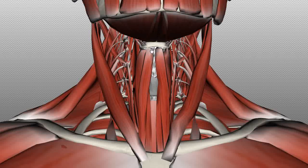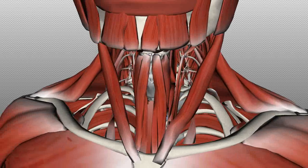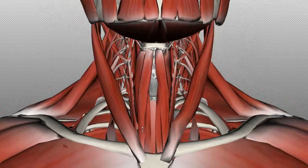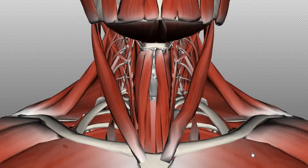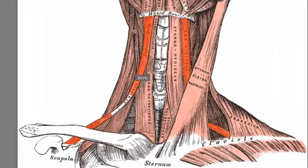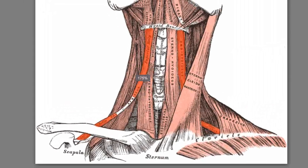This muscle runs down from the hyoid to the posterior aspect of the sternum — that's the sternohyoid. Annoyingly, this model doesn't have one of the muscles, so I'm going to use an old-school Grey's Anatomy image to show you that. So here, I just showed you the sternohyoid on the 3D model.